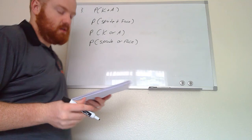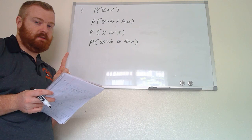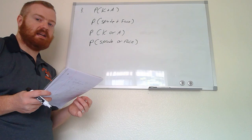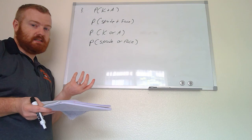For this next question, we're asked to find the probability of some different things happening when drawing one card from a deck. The first question asks: what is the probability of drawing a king and an ace? Those are two separate cards, and since we're only drawing one card, it's impossible for both to happen. Therefore, the probability is zero.